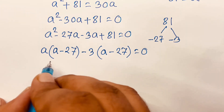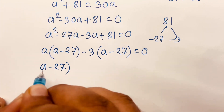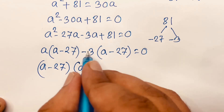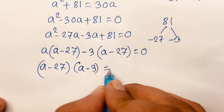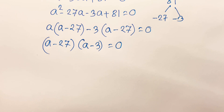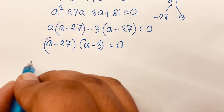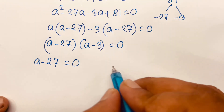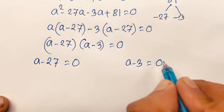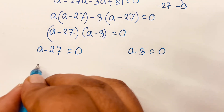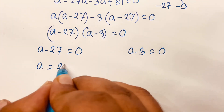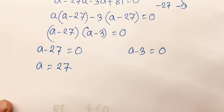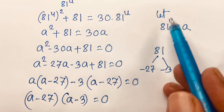Then a minus 27 is common. So we get (a minus 27)(a minus 3) is equal to 0. We find two cases: the first case is a minus 27 equals 0, and the other case is a minus 3 equals 0. So a equals 27. Remember that a is 81 power u.